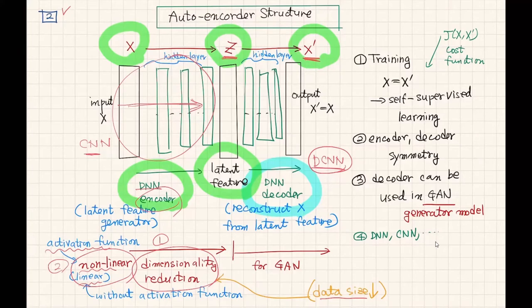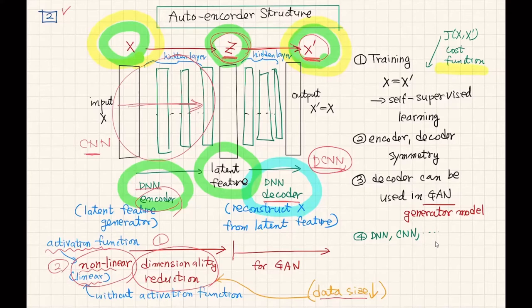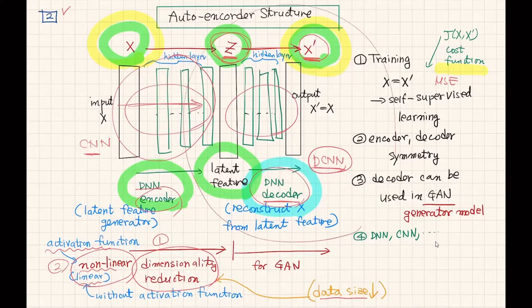The second part of the network is the decoder. It translates from latent space vector to image X-dash. Training is done by comparing input X and output X-dash to define a cost function — probably mean square error. Then we apply backpropagation to complete the weights of the encoder DNN and decoder DNN. Later, only the path from G space to X-dash space is used for the generative model, and part of that model is used in GAN.